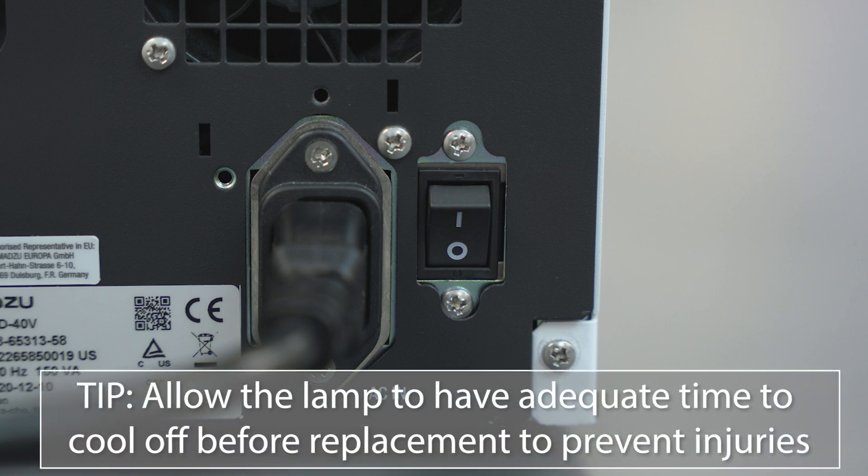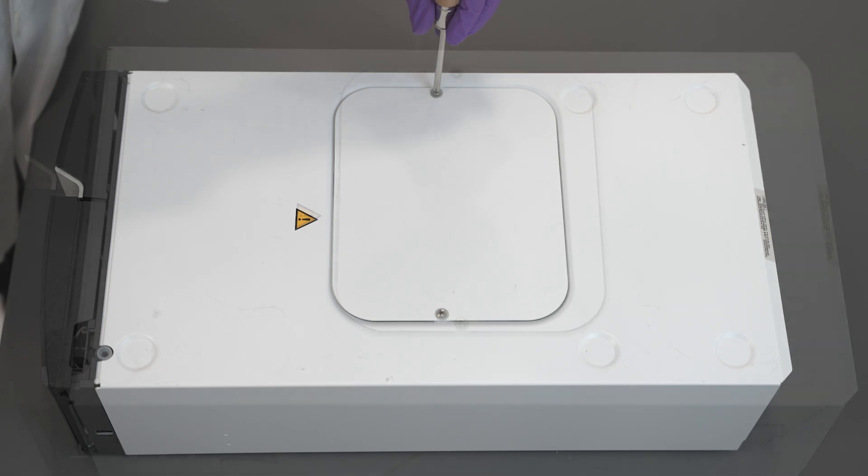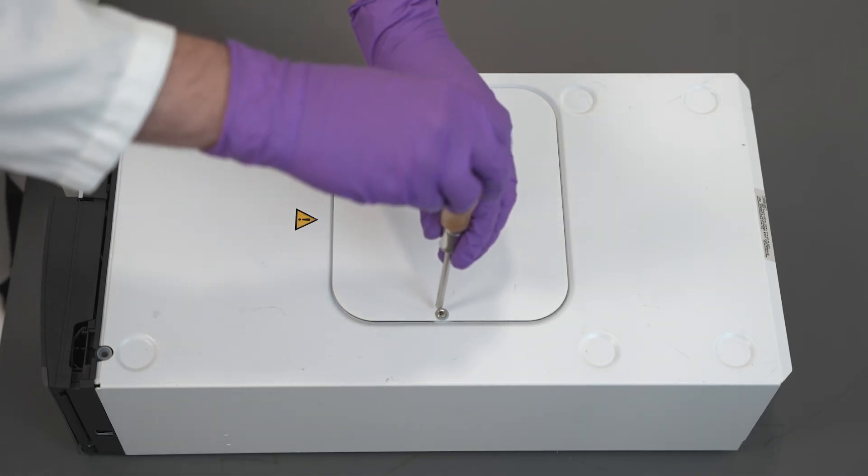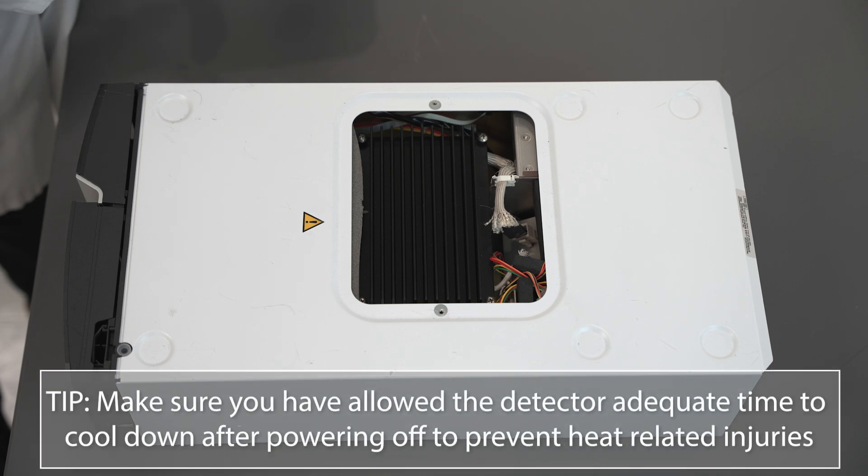Allow the lamp to have adequate time to cool off before replacement to prevent injuries. Remove any reservoir trays or modules that sit on top of the UV-Vis detector so that you can access the top cover. Loosen the two screws and remove the top cover. Make sure you have allowed the detector adequate time to cool down after powering off to prevent heat-related injuries.